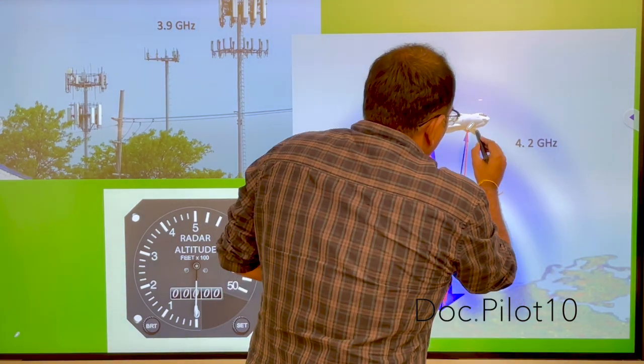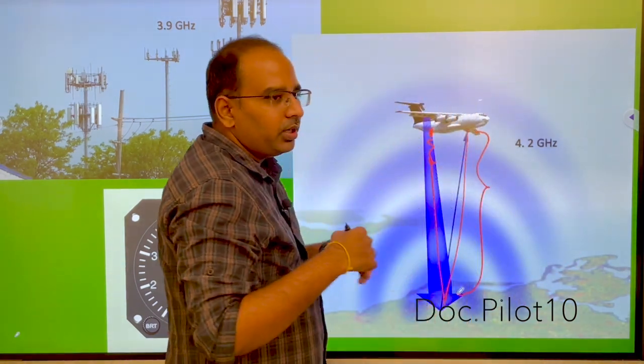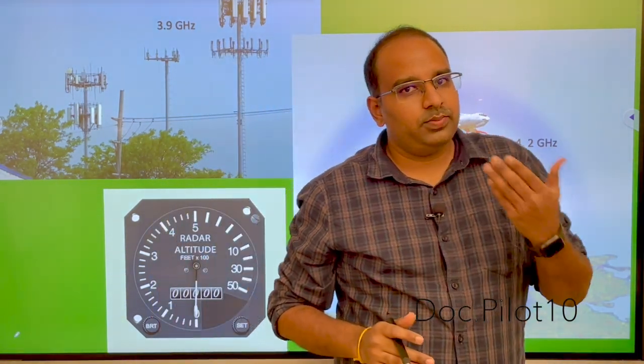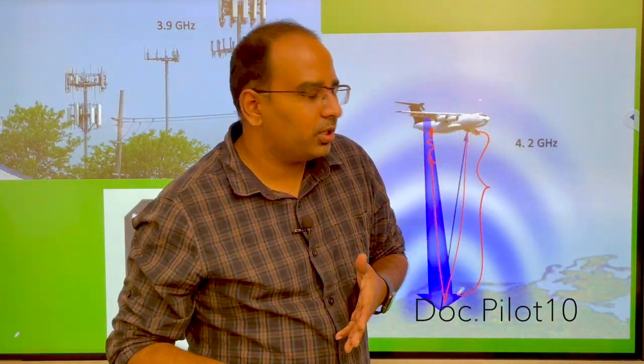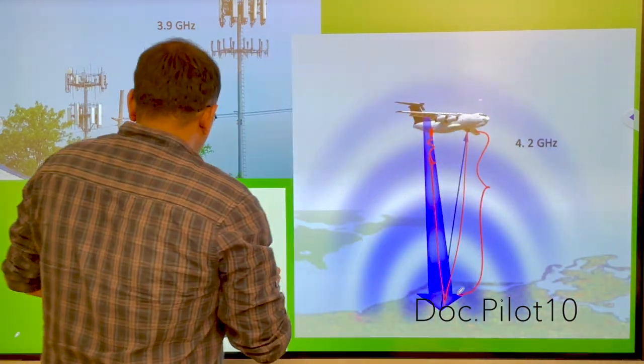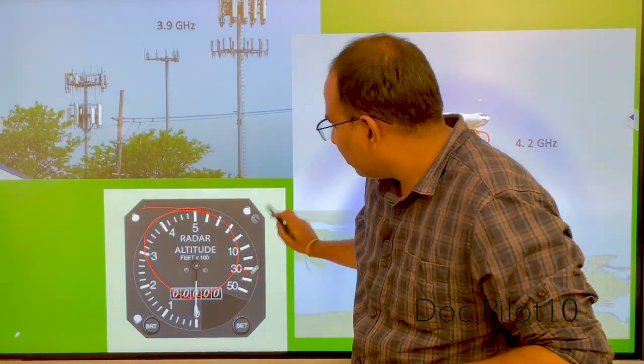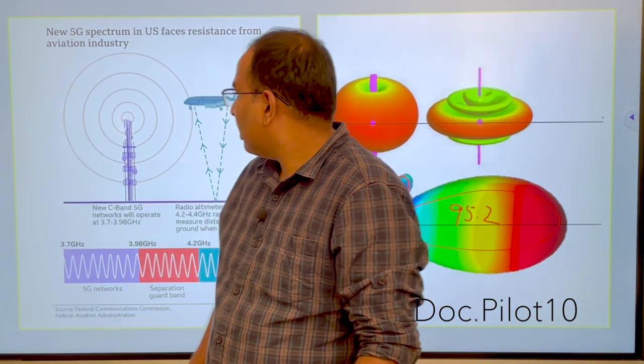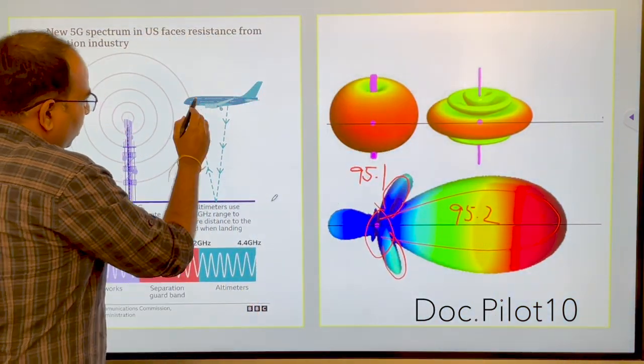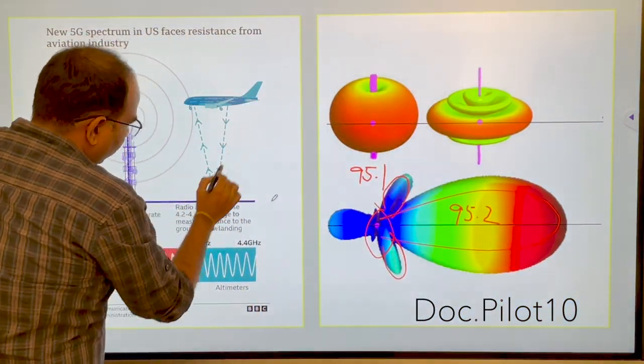And that time is converted into distance because light travels at speed of 3 into 10 power of 8 meters per second. And it is shown in the radio altimeter here. So it is shown in radio altimeter like this.